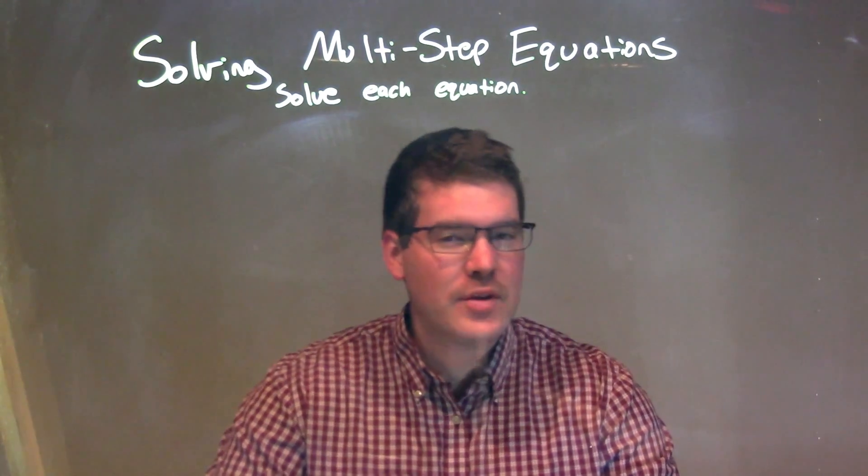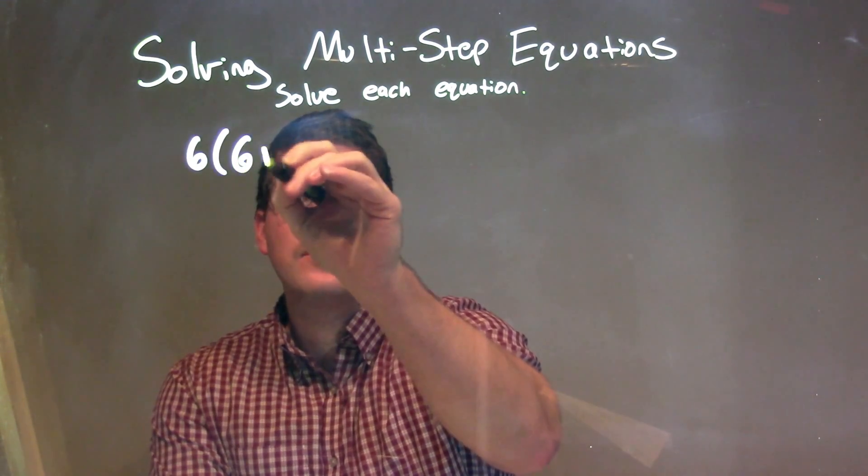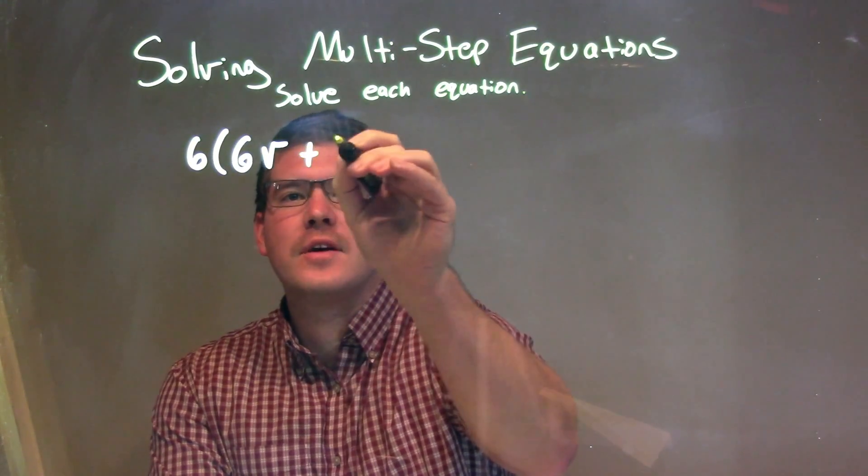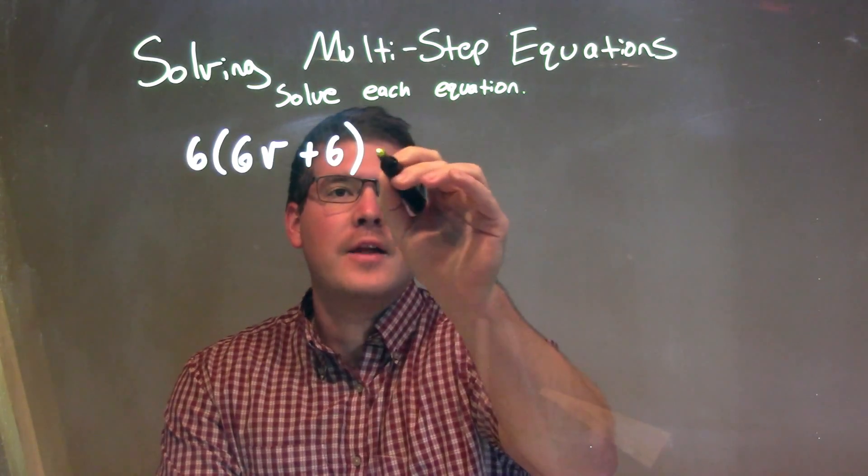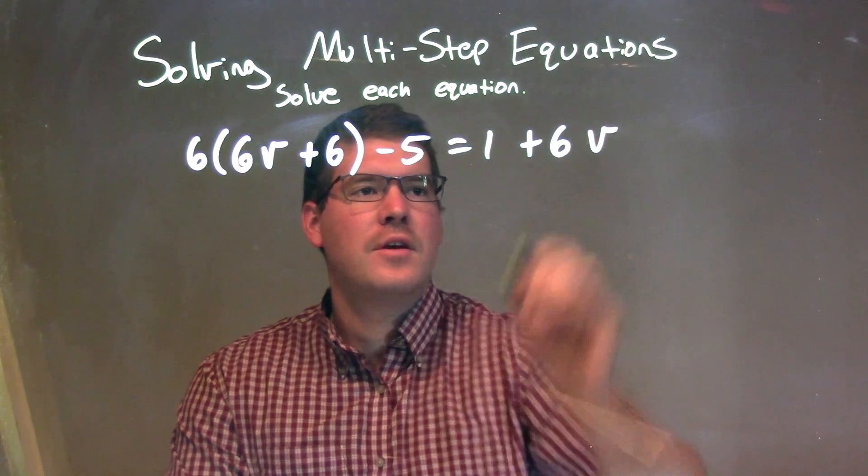So, if I was given this equation: 6 times parentheses, 6V plus 6, minus 5 equals 1 plus 6V.